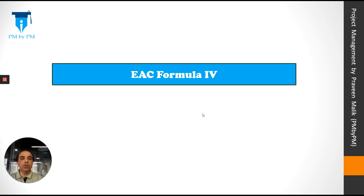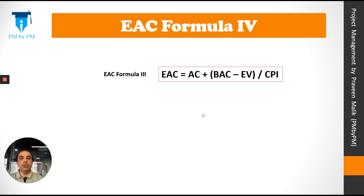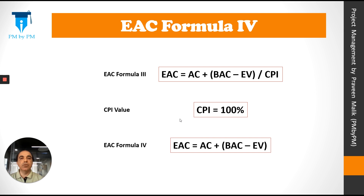Let's look at a fourth formula. Assume the project team believes that past performance will not affect future performance — the irregularities of the past will not be repeated. The remaining work will be completed at 100% cost efficiency as per the original estimates; essentially the 45 remaining tables will be built at $45,000 as originally estimated. Since CPI = 1 (100% efficiency), EAC Formula 4 becomes: EAC = AC + BAC − EV.